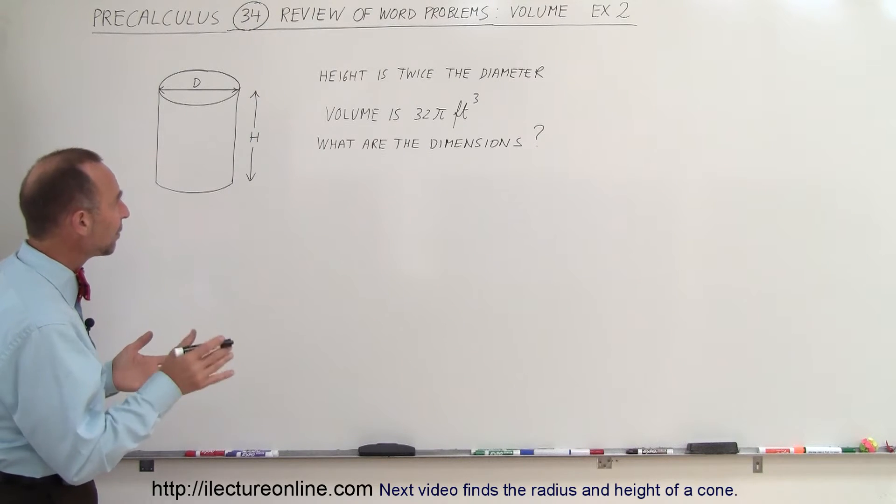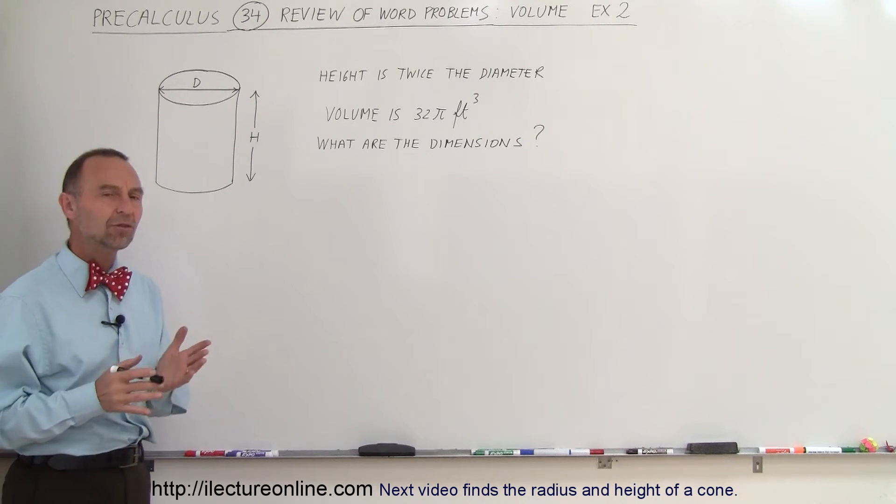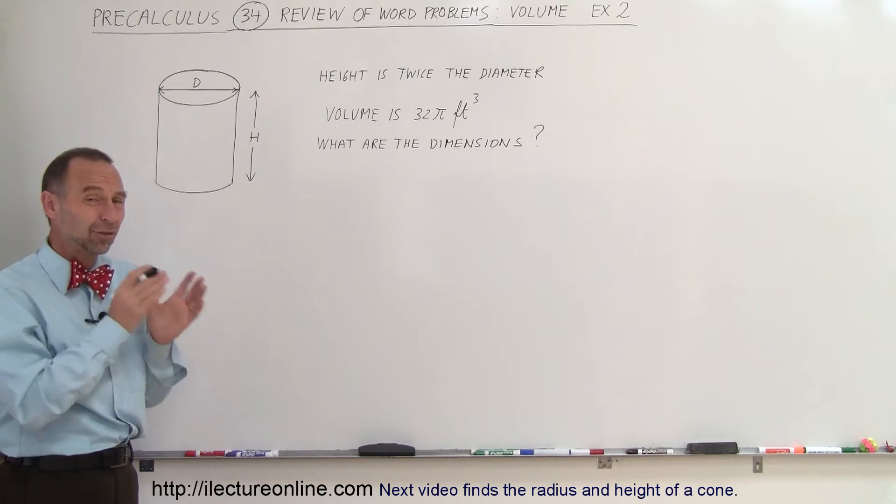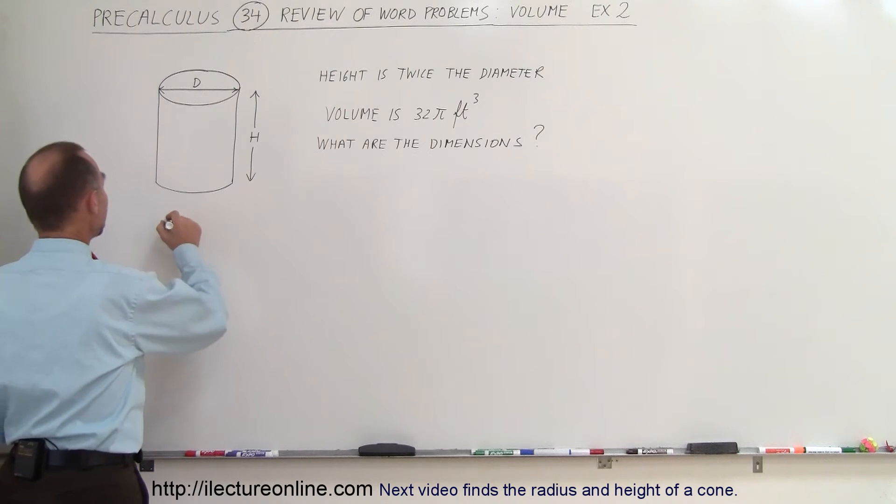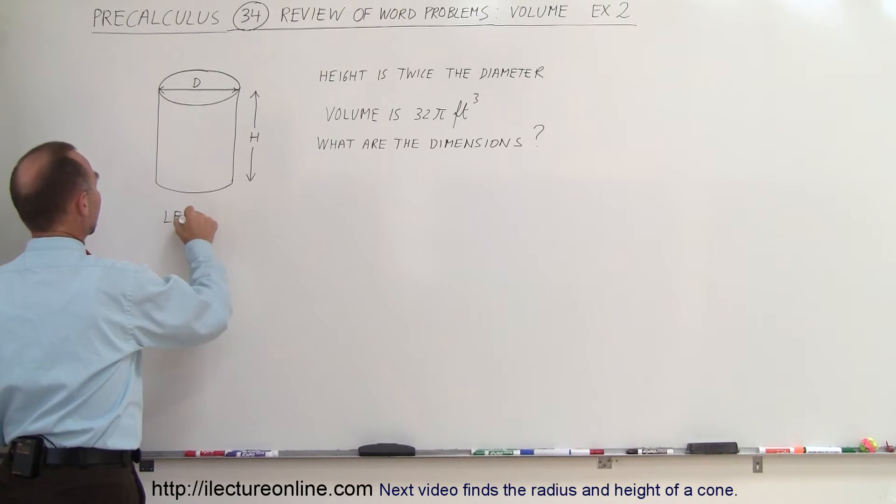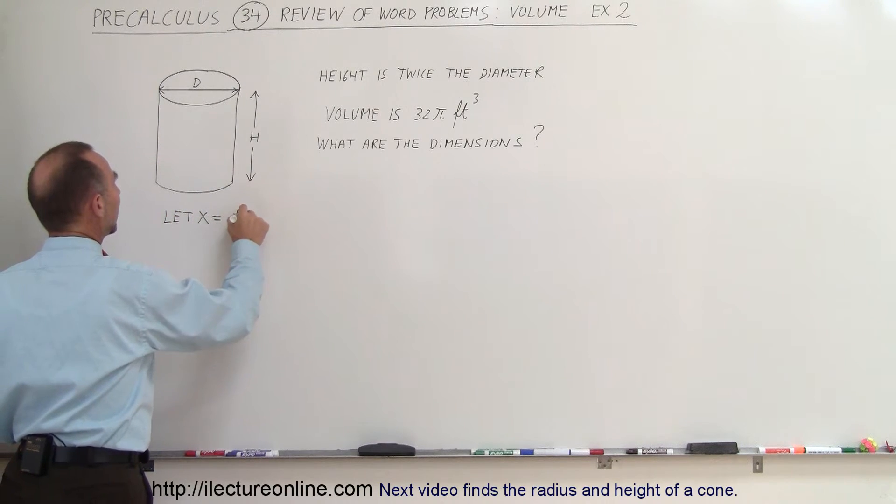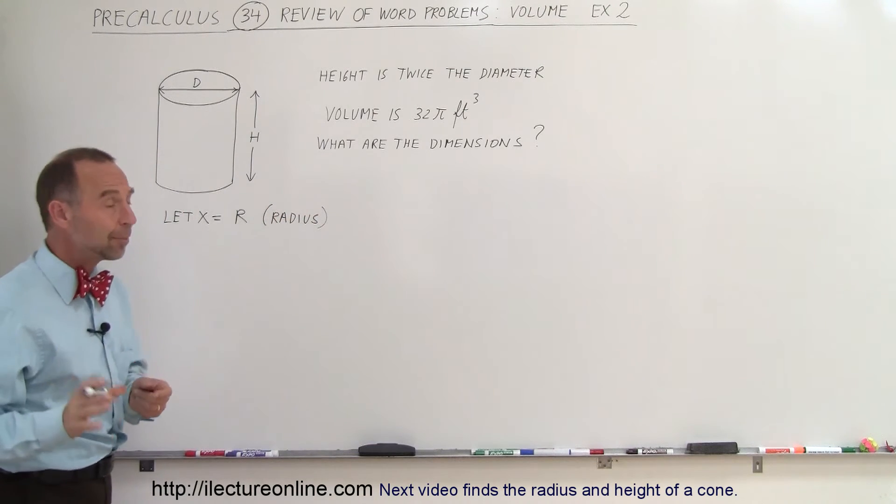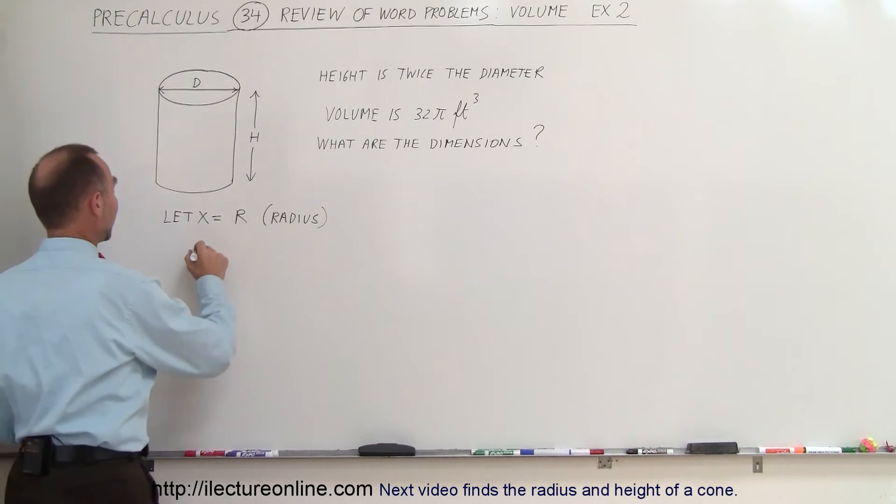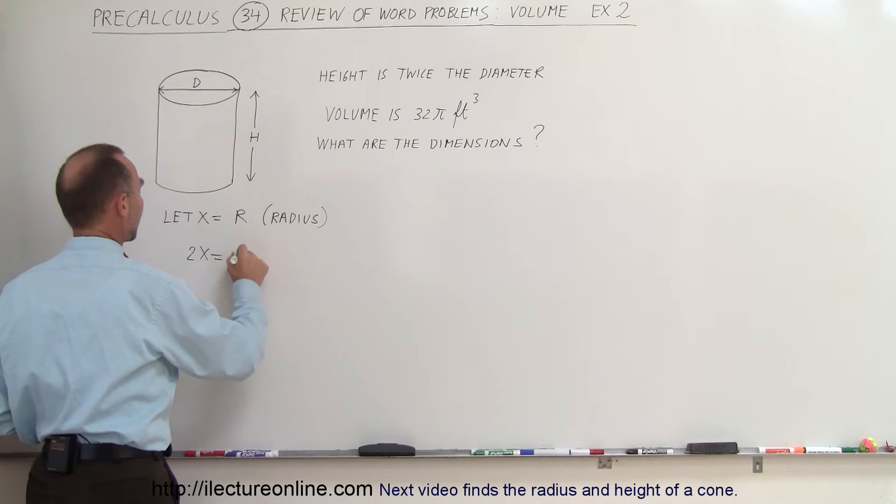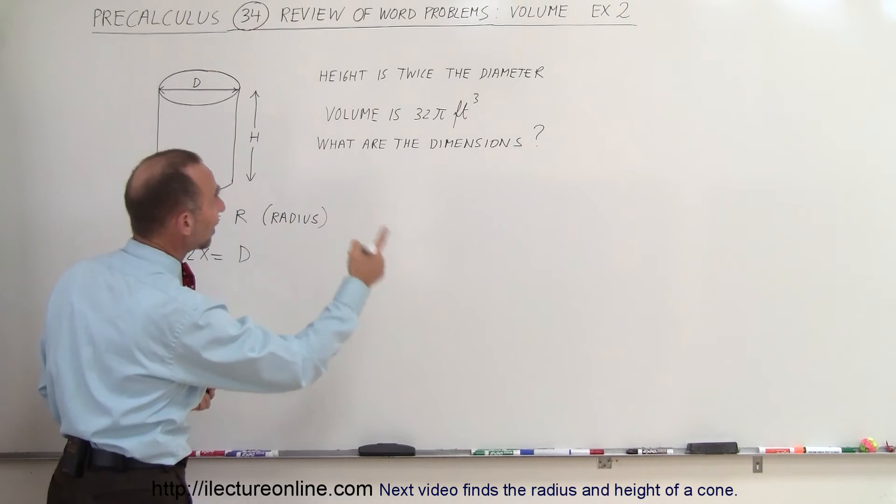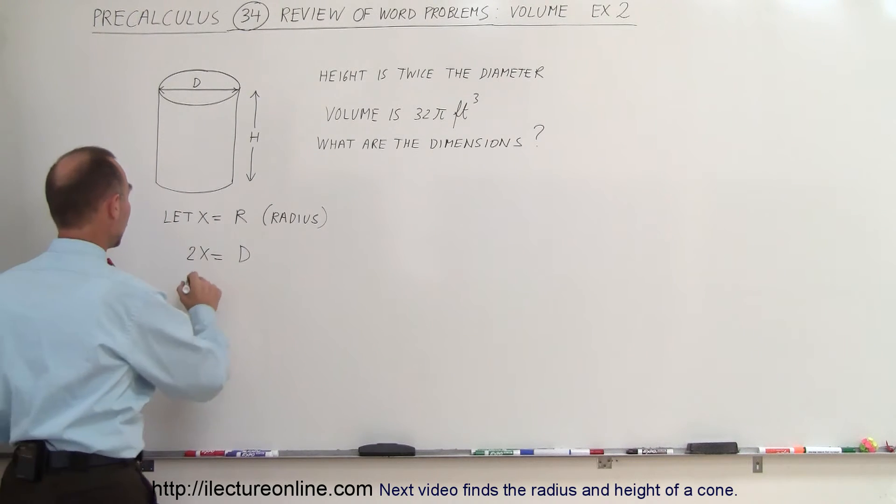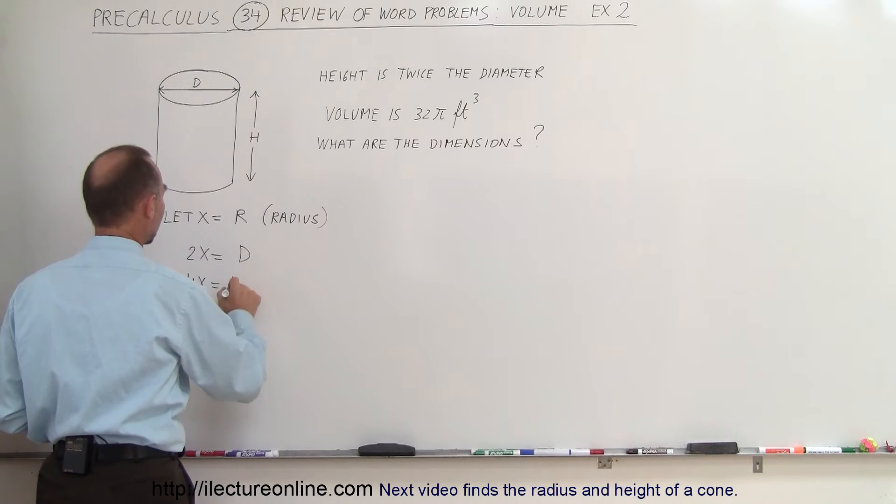We know that the diameter is the smallest of the two dimensions, but usually we find the volume in terms of the radius, and the radius is smaller than the diameter. So I'm going to start out by saying let x equal the radius r. We know that the diameter is twice the radius, so therefore 2x equals the diameter d. Since the height is twice the diameter and the diameter is 2x, that means the height must be 4x, so 4x equals the height.